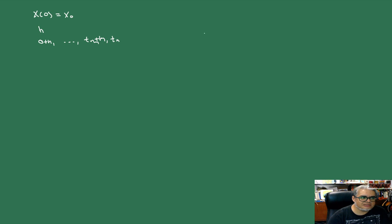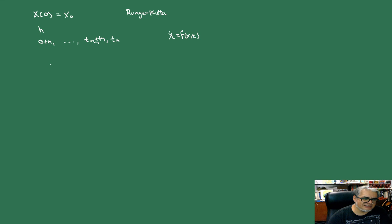¿Qué problema andamos persiguiendo? Este es el método Runge-Kutta. El problema es X punto igual a F de X y T. Lo que vamos a hacer es aproximar las derivadas y luego vamos a hacer una aproximación que se parece mucho a la de Taylor pero aproximando la parte polinomial. Entonces vamos a necesitar cuatro pasos.